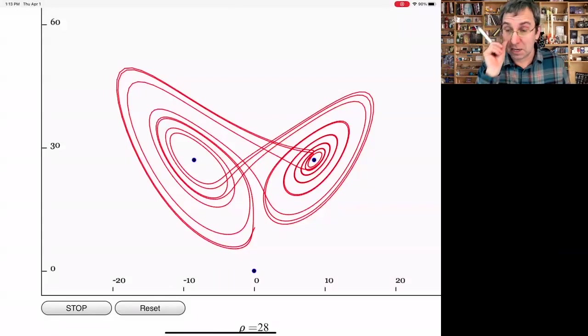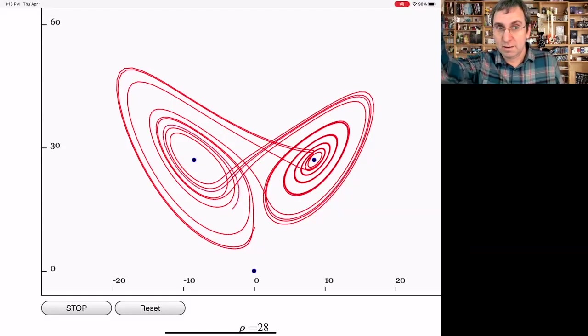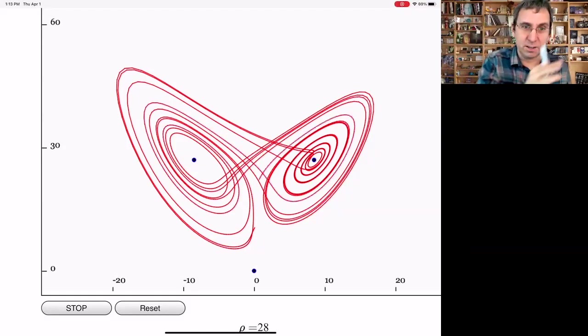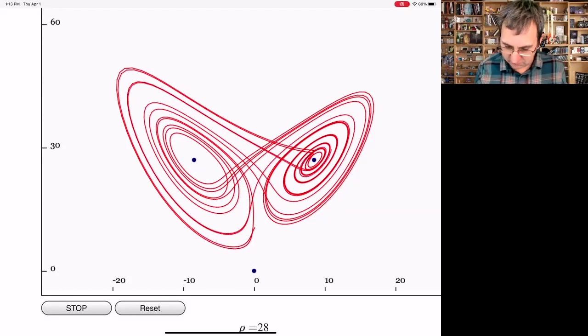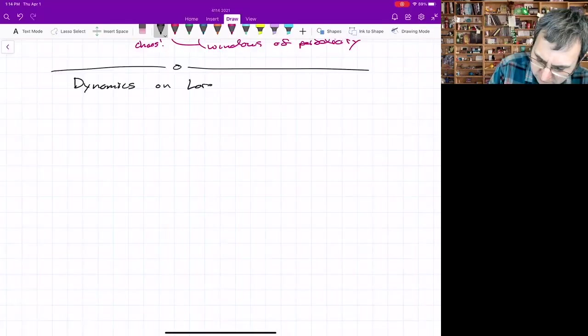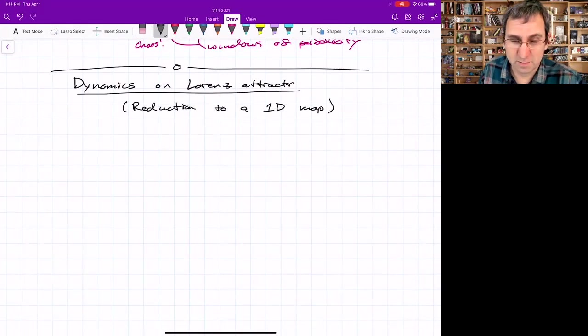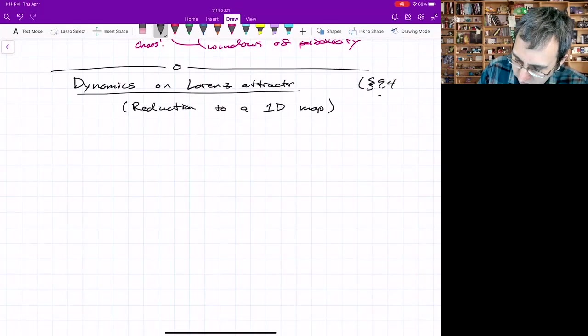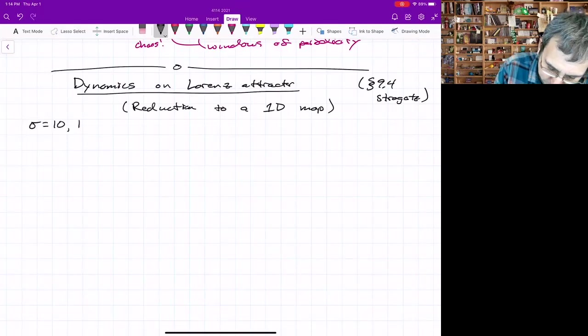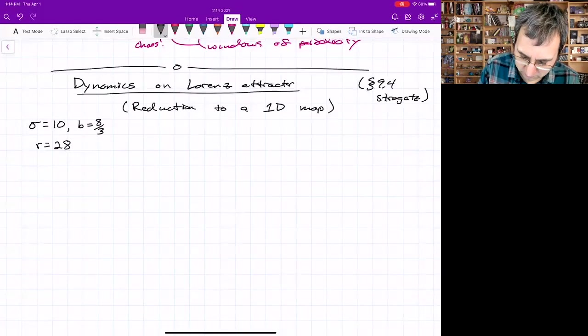For some periods of time, the peak of Z, the local peak, is just getting bigger and bigger. And then you have a jump to the other side. So he did something with that information: dynamics along the Lorenz attractor. And what he does is a reduction to a 1D map. This is in section 9.4 of Strogatz. So the values that I've been showing, those are sigma=10, B equals 8 thirds, R equals 28.